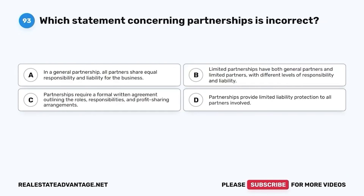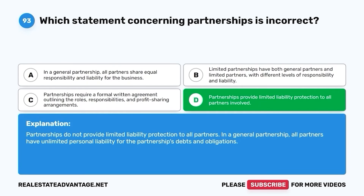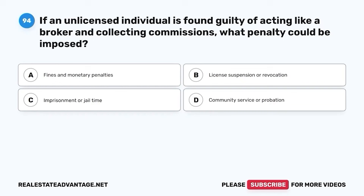Question 93. Which statement concerning partnerships is incorrect? A. In a general partnership, all partners share equal responsibility and liability for the business. B. Limited partnerships have both general partners and limited partners with different levels of responsibility and liability. C. Partnerships require a formal written agreement outlining the roles, responsibilities, and profit sharing arrangements. D. Partnerships provide limited liability protection to all partners involved. The correct answer is D. In a general partnership, all partners have unlimited personal liability for the partnership's debts and obligations.